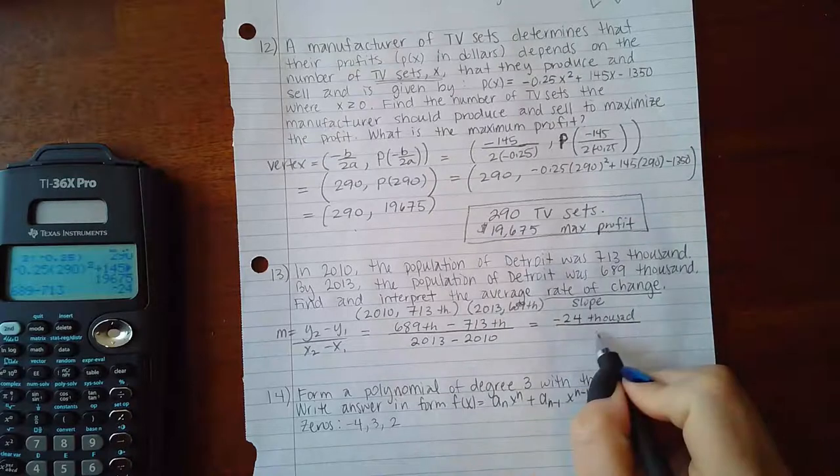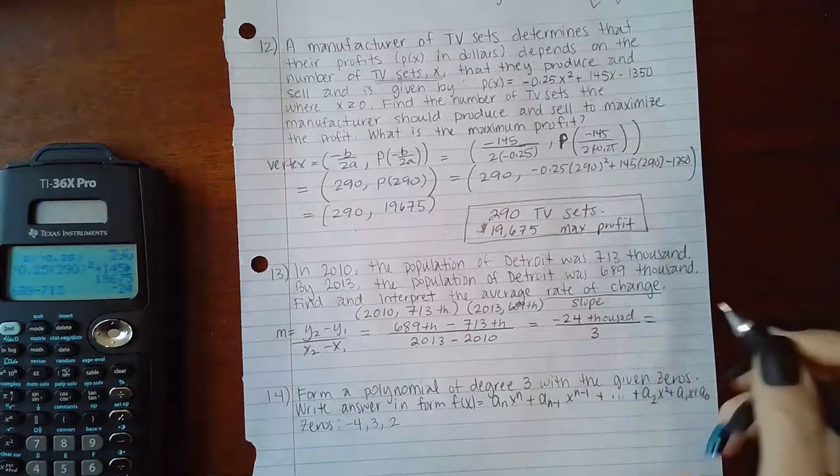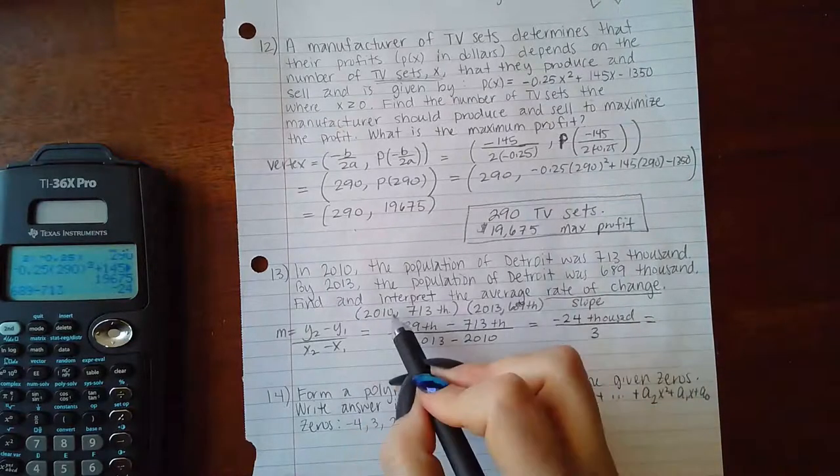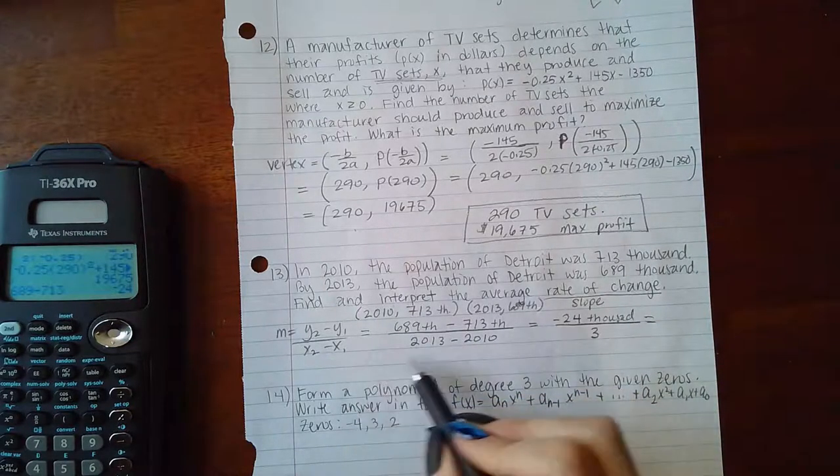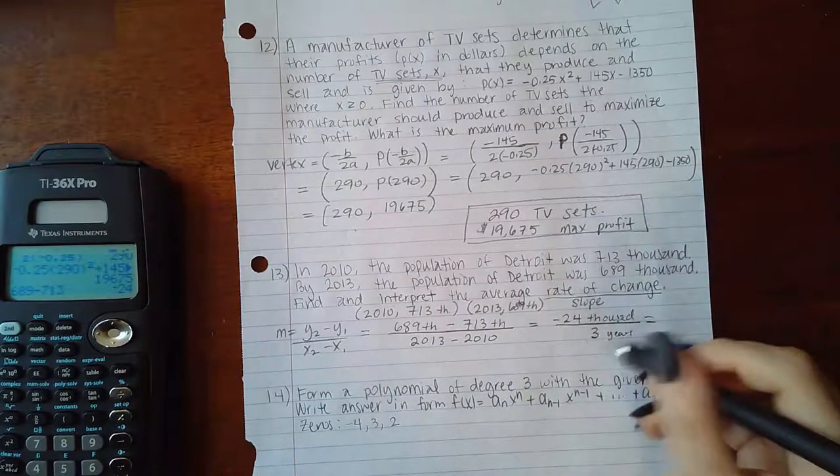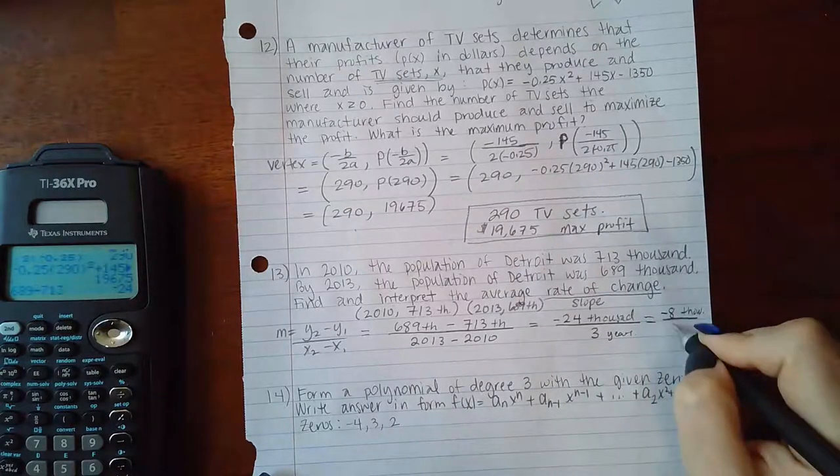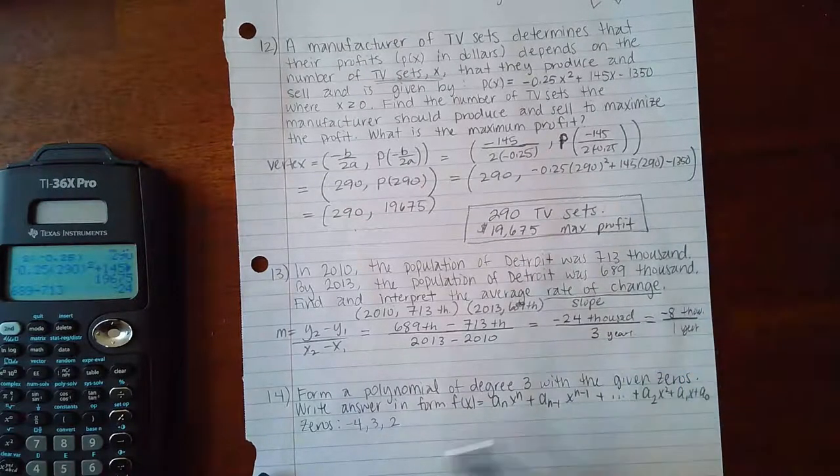Over 3. I can reduce that. The x-values are in years, so if I reduce by 3, I get negative 8,000 over one year. I can rewrite that as negative 8,000 per year.